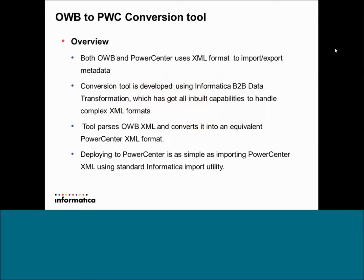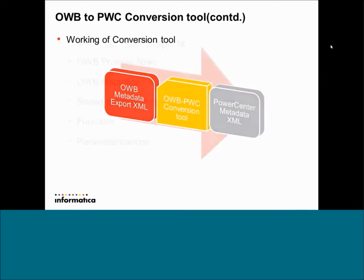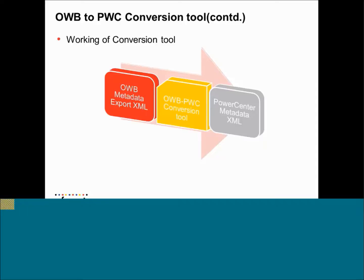OWP to PowerCenter conversion tool. In our previous slide, we saw how the metadata is structured in OWP and in PowerCenter — both have the data in XML formats. This conversion tool is built using Informatica B2B Data Transformation tool, which has a lot of built-in functions to handle complex XMLs. This tool takes OWP XML as input, converts it into an equivalent PowerCenter XML format. Once you have the converted PowerCenter XML, it is just like importing any other PowerCenter mapping.